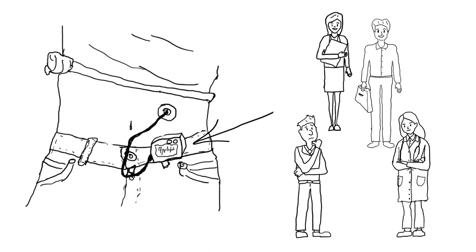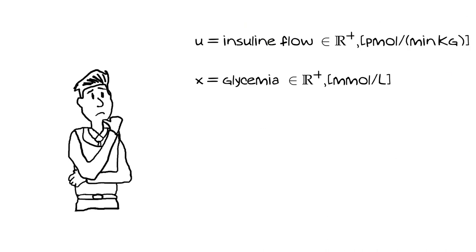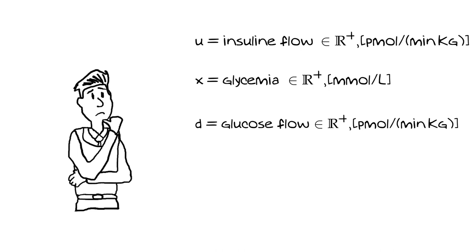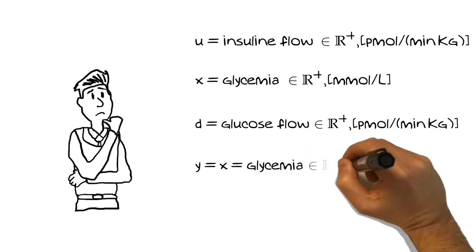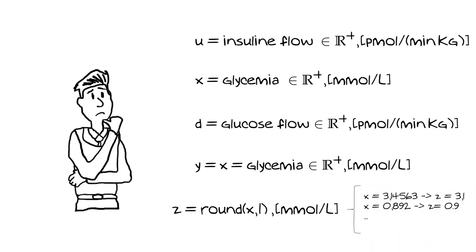Here is where we want to go. Now that we understand how our body works, we identify the four horsemen. The state is trivially the glycemia level — a positive real number. The input is the insulin flow that our revolutionary device shall release, also a positive real number with an unknown upper limit, so we leave the range as R+. The disturbance is the excess glucose coming from the blood. The performance output, which is what we want to control, is the same as the state, while the measured output is a quantized version — our sensor can measure glycemia with one decimal digit precision.